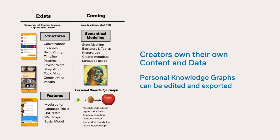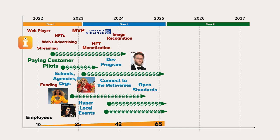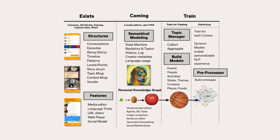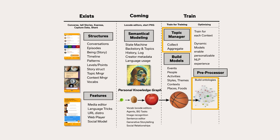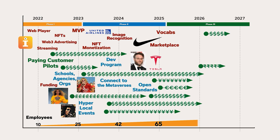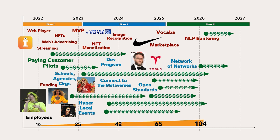2025 is when we can finally begin phase 3 of our business. We'll launch AI storytelling with the ability for creators to create their own vocabs and sell them in a marketplace. When the personal knowledge graph grows large enough, a topic manager is utilized to build ontologies. These models are then pre-processed and utilized for personalized NLP experiences. The final version of the timeline maps out future growth, leveraging networks of networks and providing NLP bantering, generative storytelling, and vocabs tightly coupled to interactive conversations.